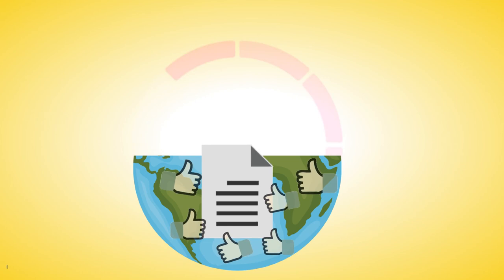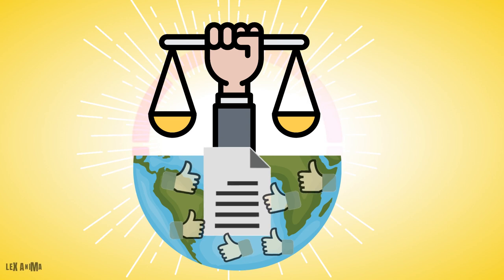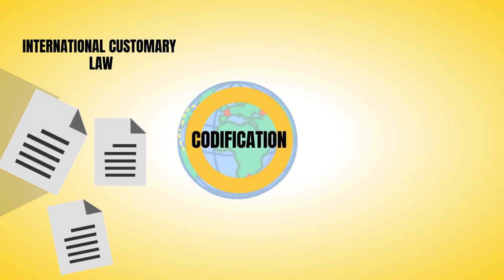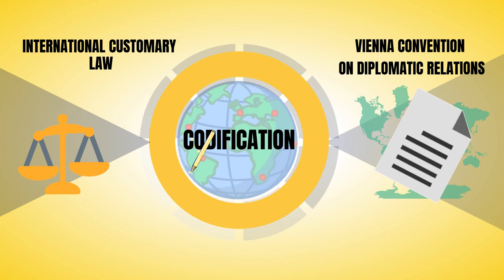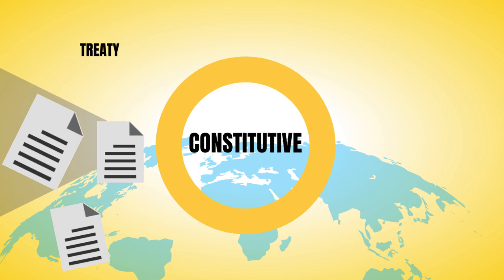In that case, that treaty will be viewed as a source of international law for non-signatory states as well. There are also many treaties which reflect or codify existing customary rules, like the Vienna Convention on Diplomatic Relations. Such treaties bind non-parties not because of the treaty provision itself, but because they reaffirm a rule of customary international law.